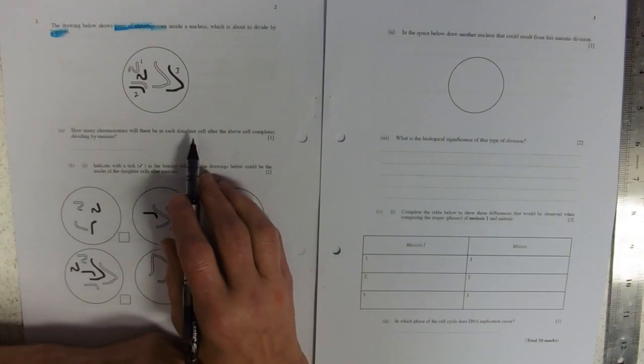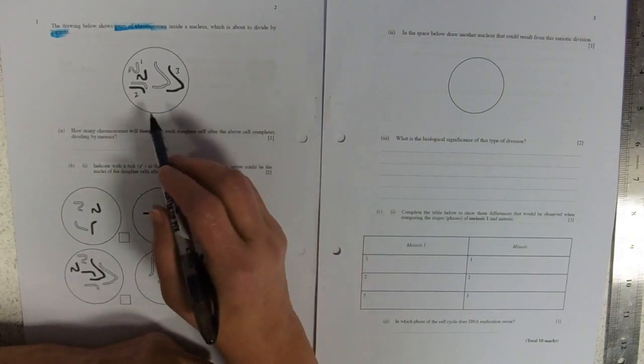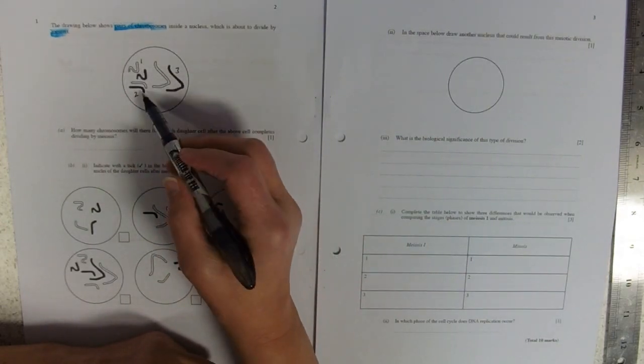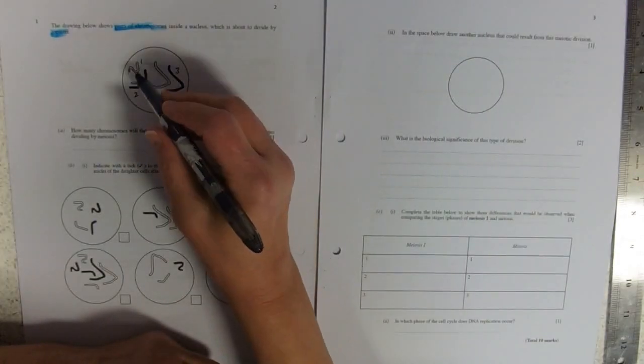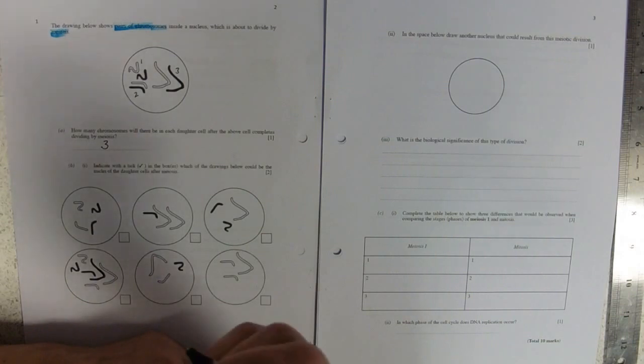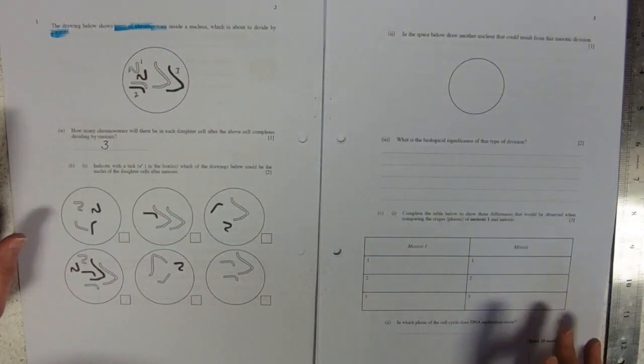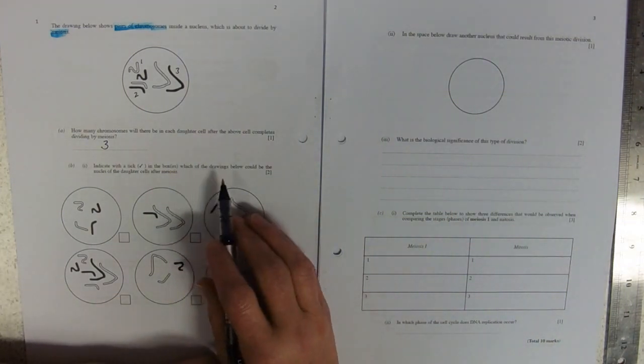How many chromosomes will there be in each daughter cell after the cell completes dividing by meiosis? So we'll have one from chromosome one, one from chromosome two, one from chromosome three. We'll have one zigzag, one walking stick, one V-shape. We'll have three, because what do I know about meiosis? It's a reduction division.